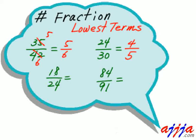What about this one? Same thing — twenty-four minus eighteen is six. Six goes here: eighteen divided by six is three times, and twenty-four divided by six is four times. That's it.